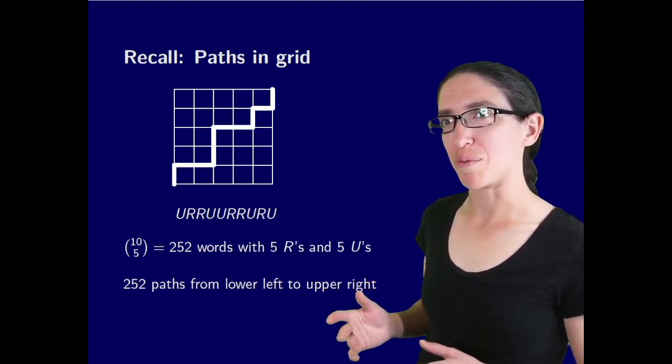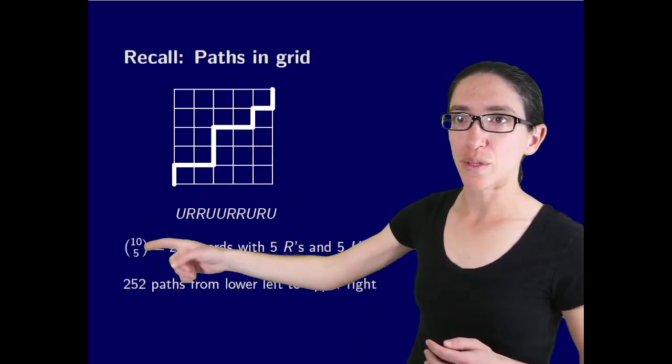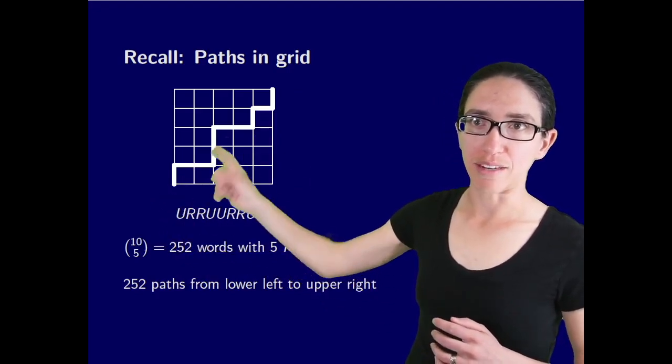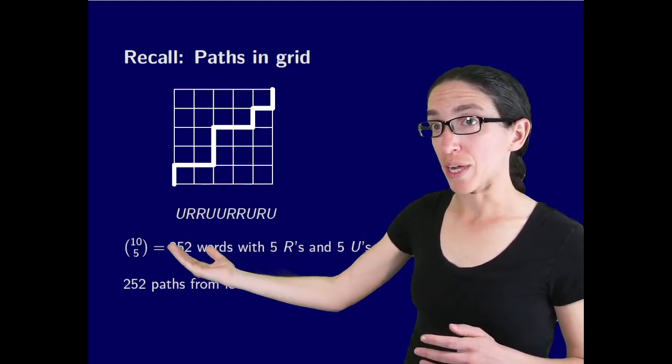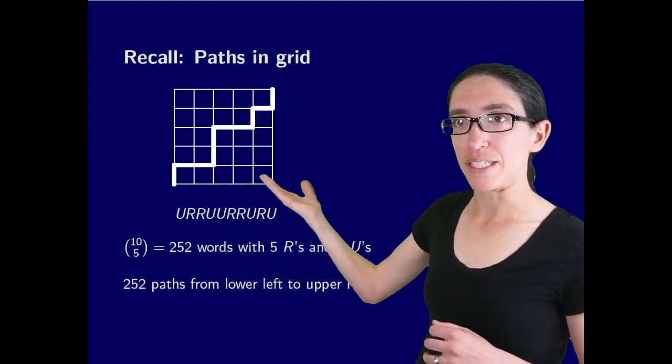Let's first recall the counting problem of counting paths from one corner to another in a grid that only go up or right. If you start at the lower left and go to the upper right, these correspond to directions up, right, right, up, up, right, right, up, right, up, in this case, corresponds with this path.